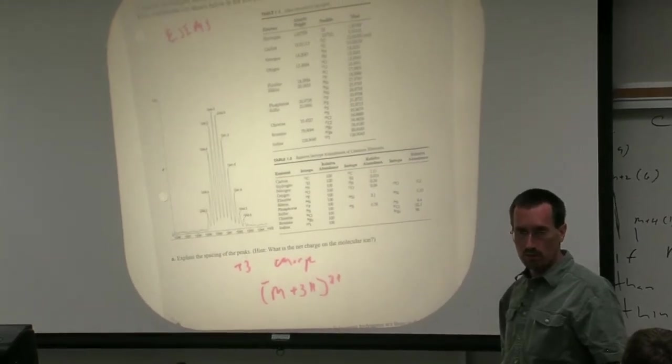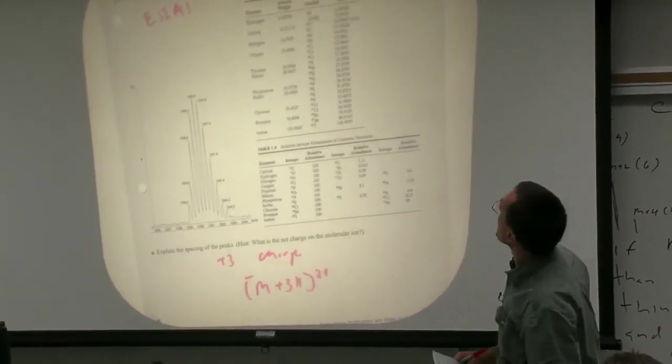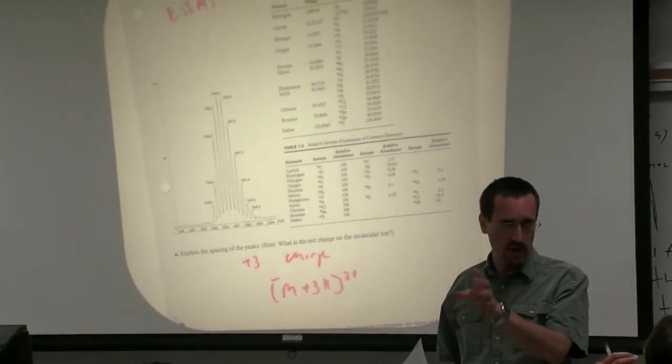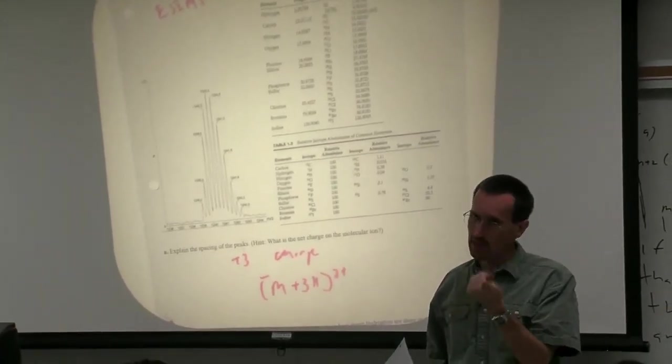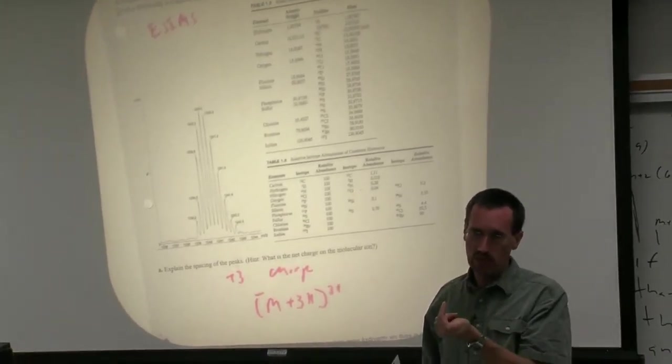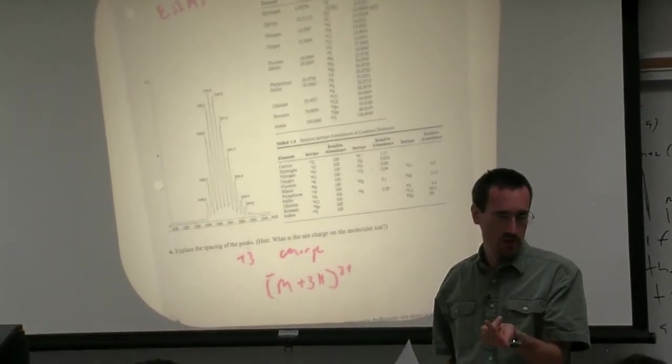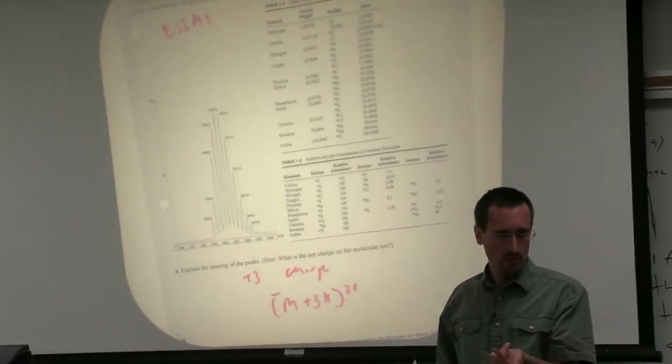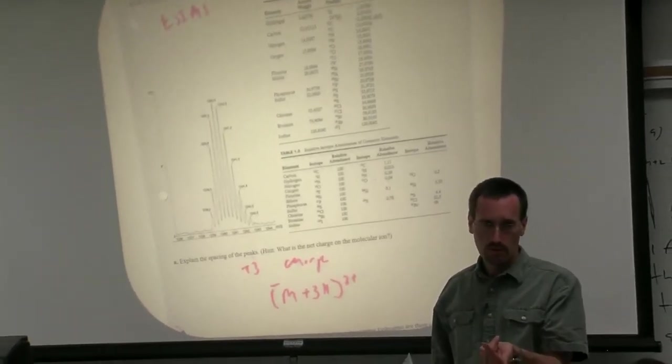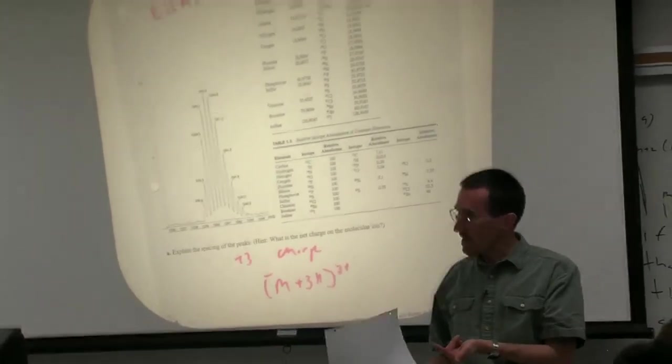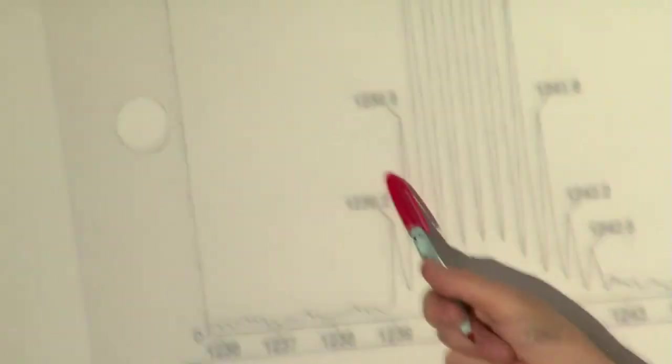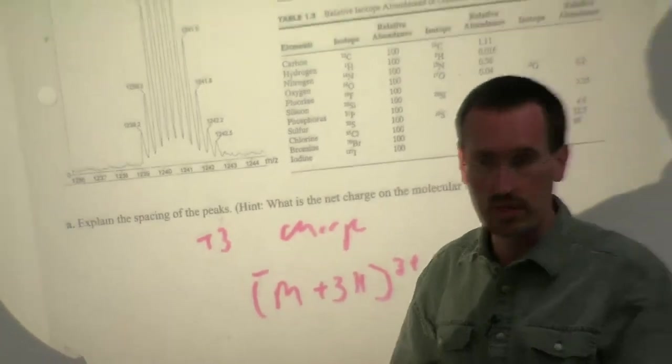Sulfur. So nitrogen has 38 nitrogens, so the fraction of molecules with one N15 is going to be roughly 0.38 percent times 38. The percentage of molecules with one sulfur 33 is going to be what? Nitrogen is actually going to be a bigger contributor to this peak. The biggest contributor is going to be one C13. The next biggest contributor is going to be one N15, and then down the line you'll have maybe one sulfur 33.